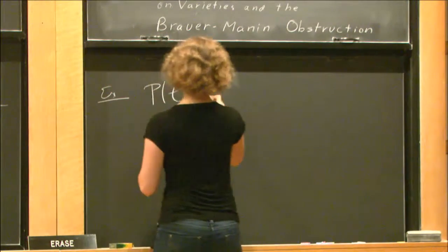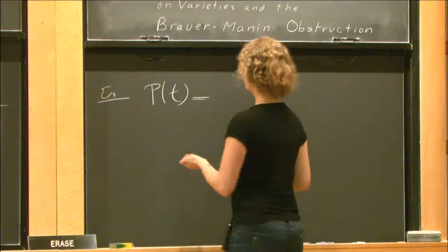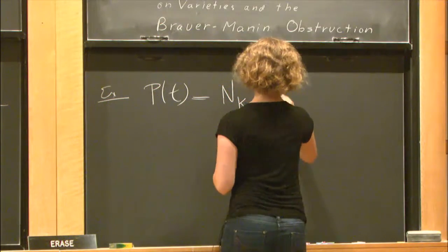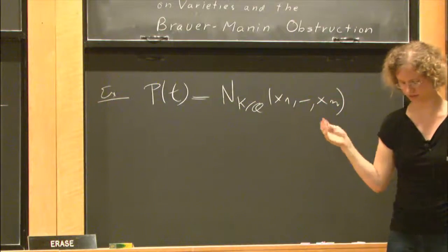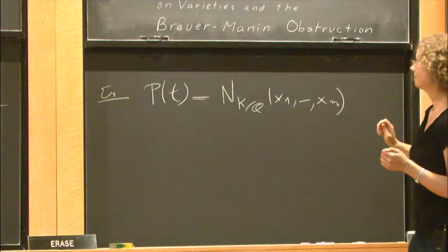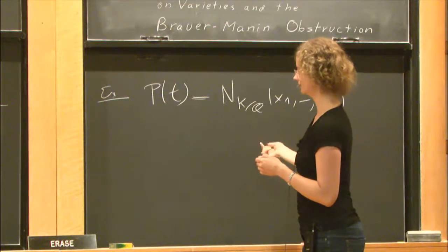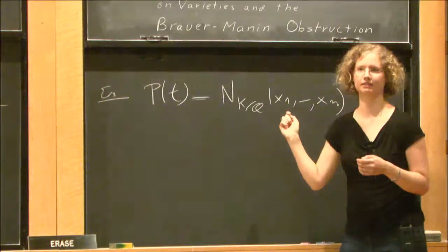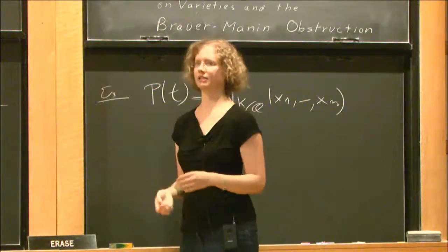I just want to give you an example where such a thing can be applied. For example, if you look at the variety, p is an irreducible quadratic polynomial. p of t equals a norm form over any number field. So that's some homogeneous form in n variables if n is a degree of the number field of degree n. Then one can show that the Brauer-Manin obstruction is the only obstruction to any smooth proper models of this variety. We had known this result previously, but now this is a special case of this much more general theorem.